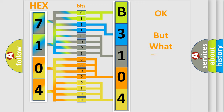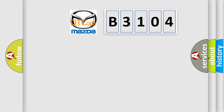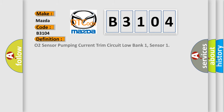We now know in what way the diagnostic tool translates the received information into a more comprehensible format. The number itself does not make sense to us if we cannot assign information about what it actually expresses. So, what does the diagnostic trouble code B3104 interpret specifically for Mazda car manufacturers? The basic definition is: O2 sensor pumping current trim circuit low, bank 1, sensor.